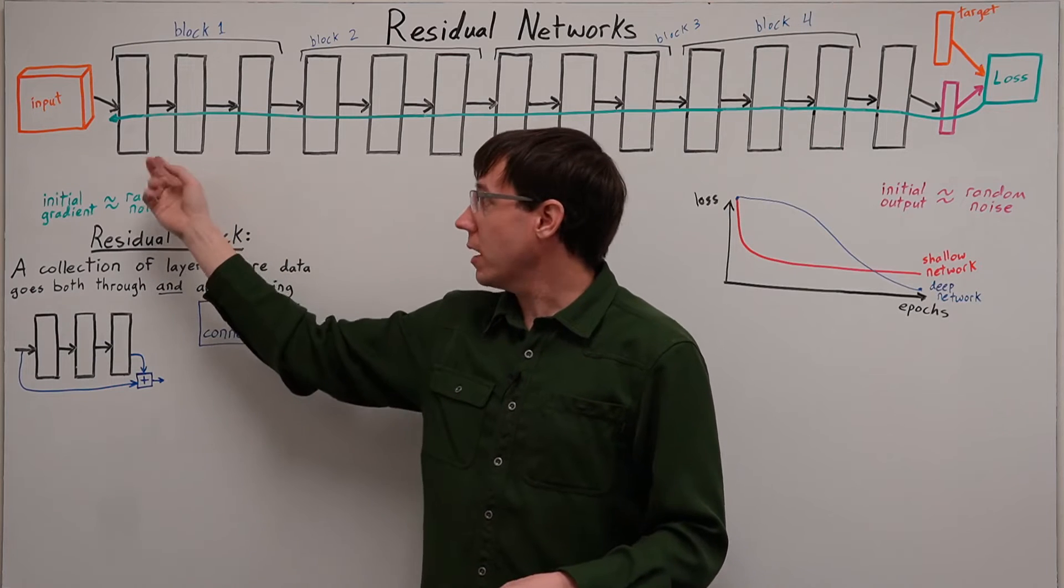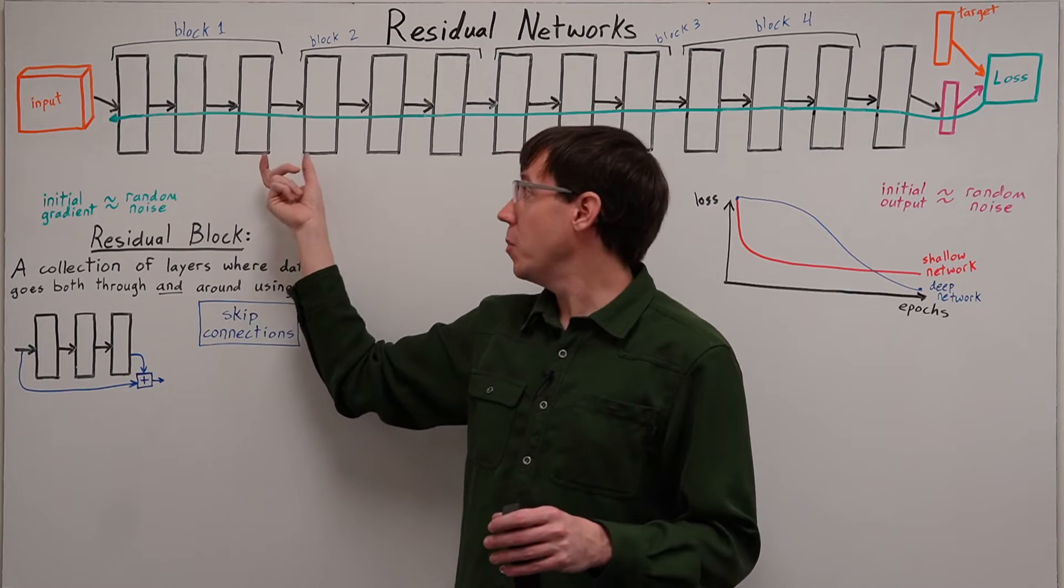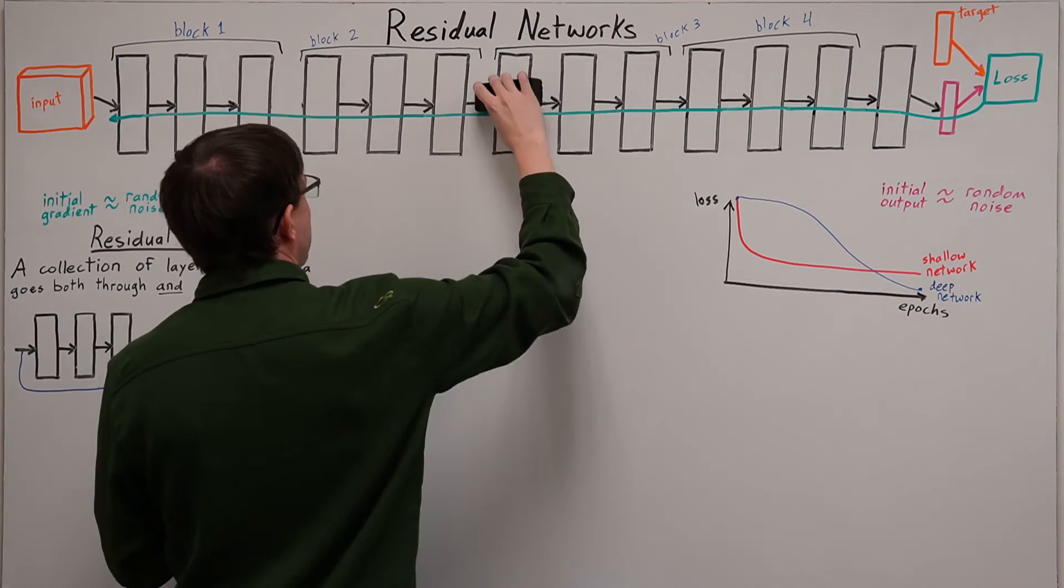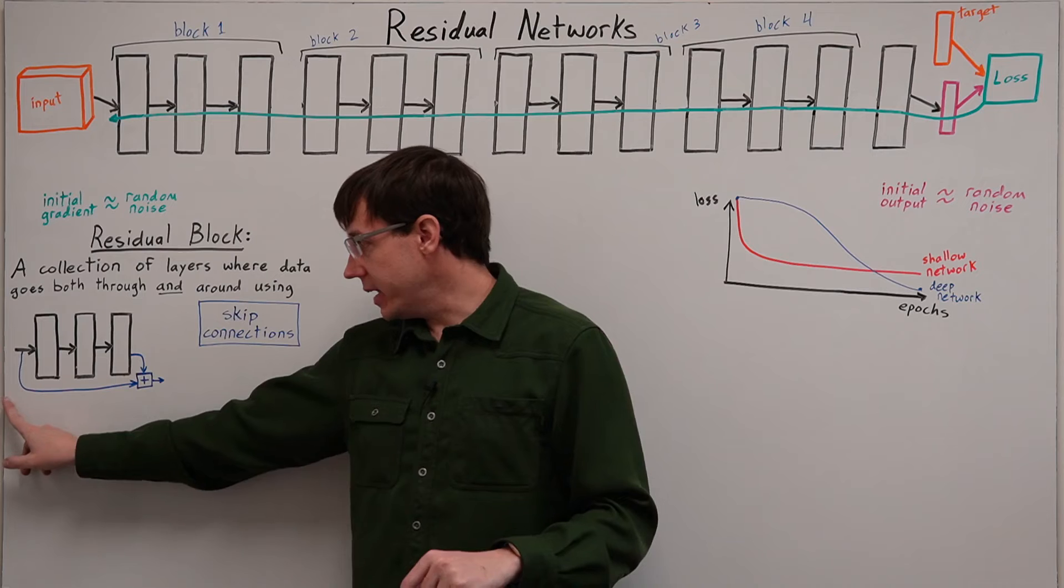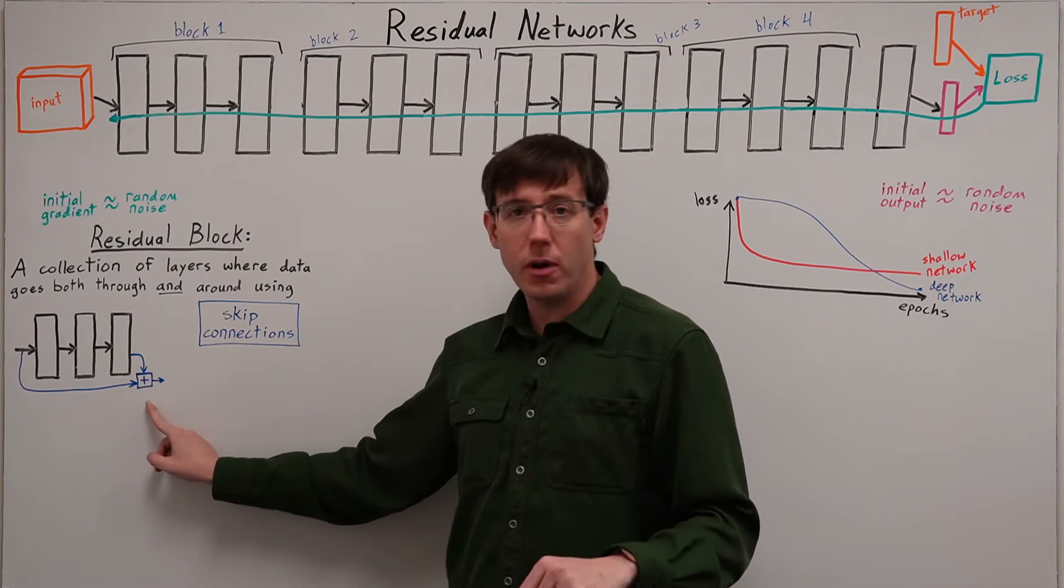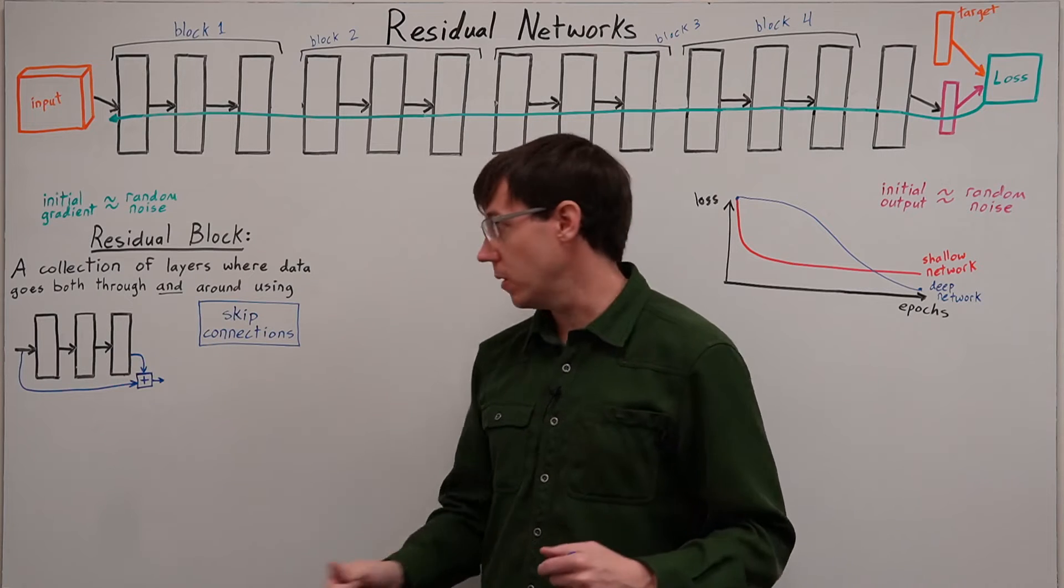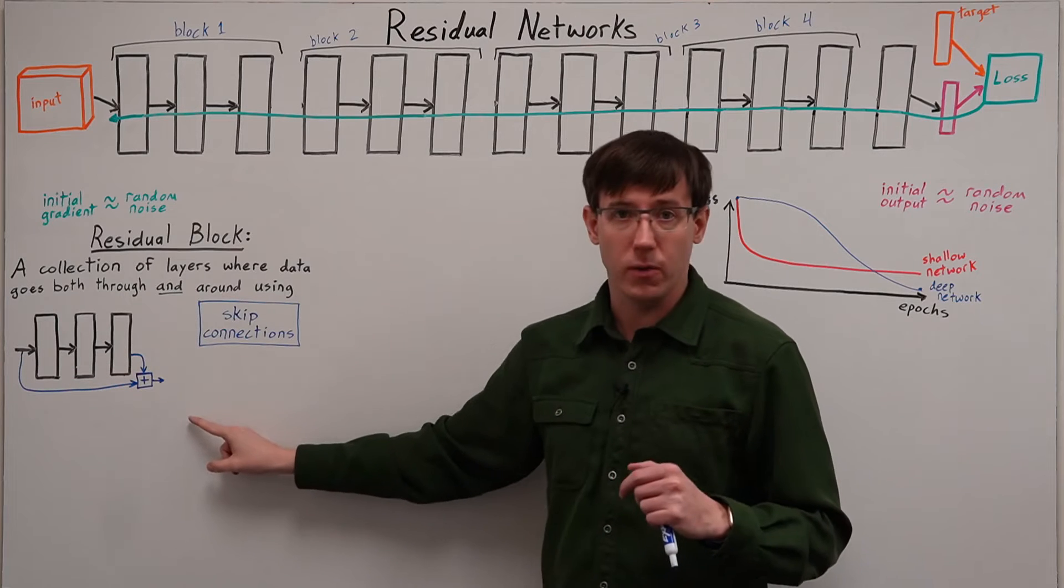Within each block, the layers will pass their data forward normally. But between blocks we'll have a new type of connection. And that connection works by combining the input to the block with the output from the block, giving two different paths for data to follow. One that goes through the block and one that goes around.